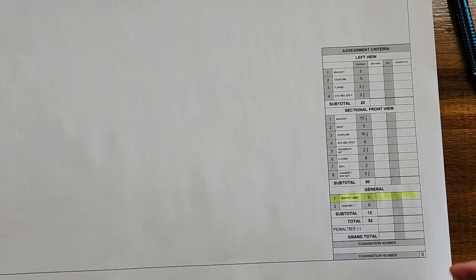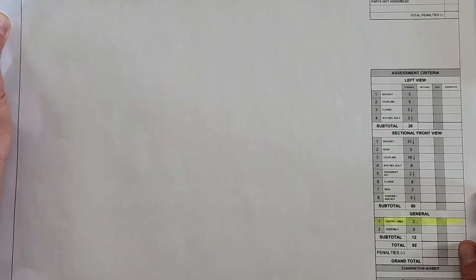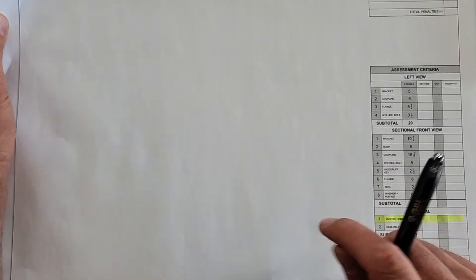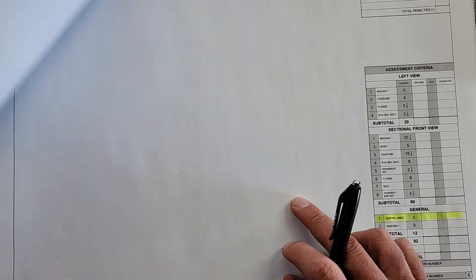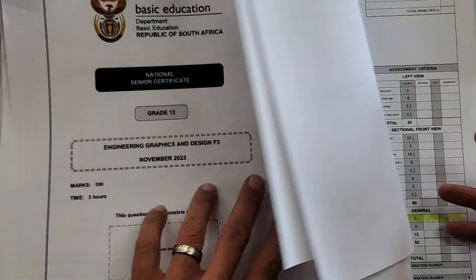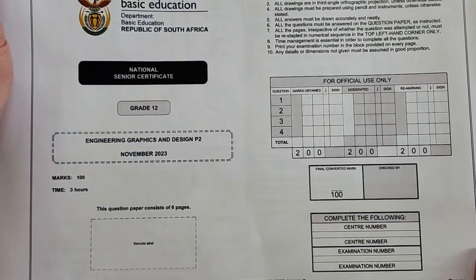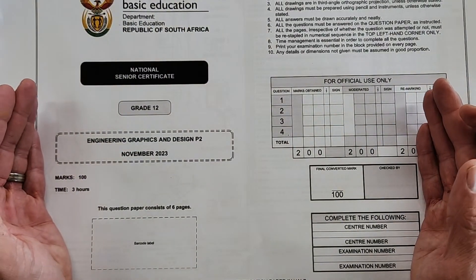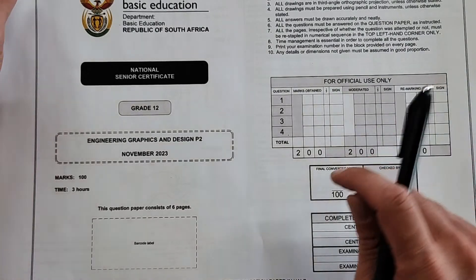Every teacher watching this is going to kick me because I said it, because I want you to actually draw this drawing. And in the EGD Master Class series I am going to take you through the steps to draw this confidently and help you also. Whatever mechanical assembly you do get, you're going to be able to answer that if you practice and if you consider some of the tips that I've shared with you. That's an overview of what you can expect in Engineering Graphics and Design Paper 2 for November 2023.